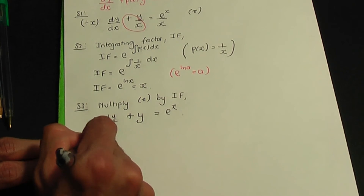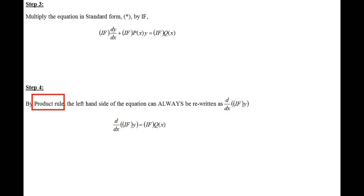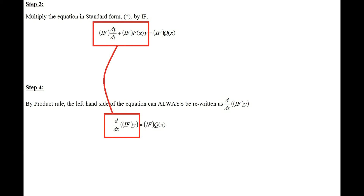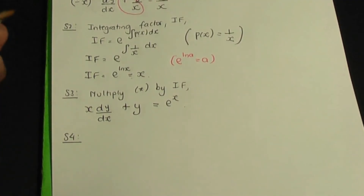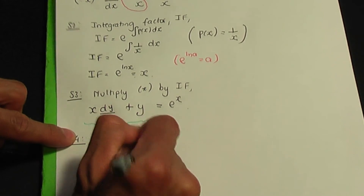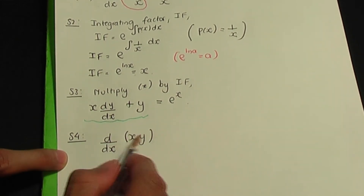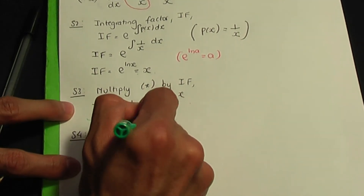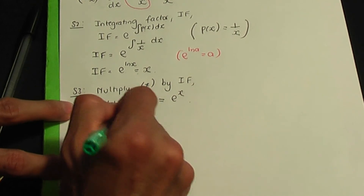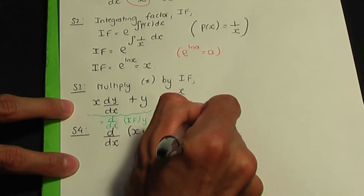Step four: by the product rule, the left-hand side can be rewritten as d/dx of (x times y). So the equation becomes d/dx of (xy) equals e^x.